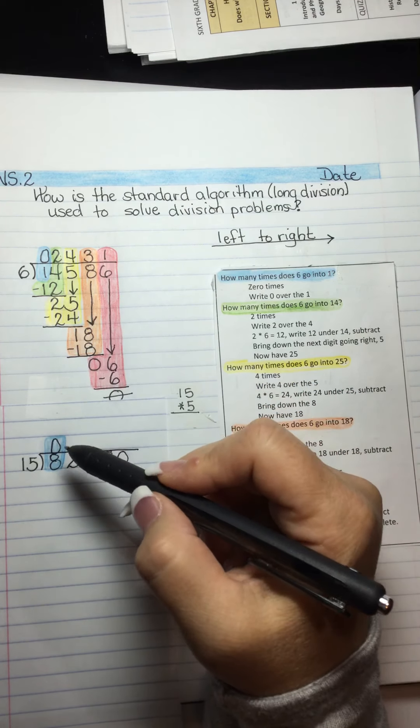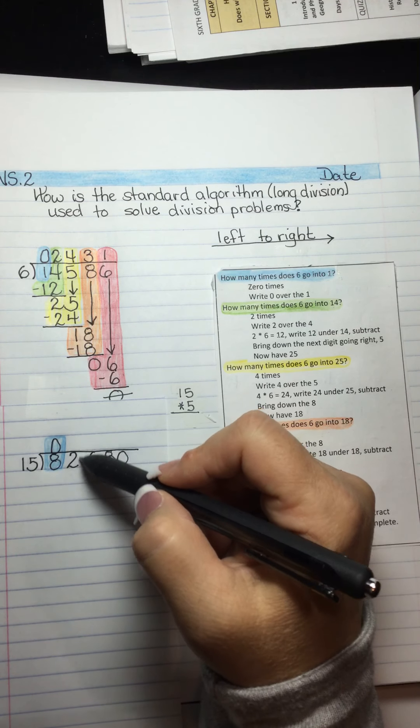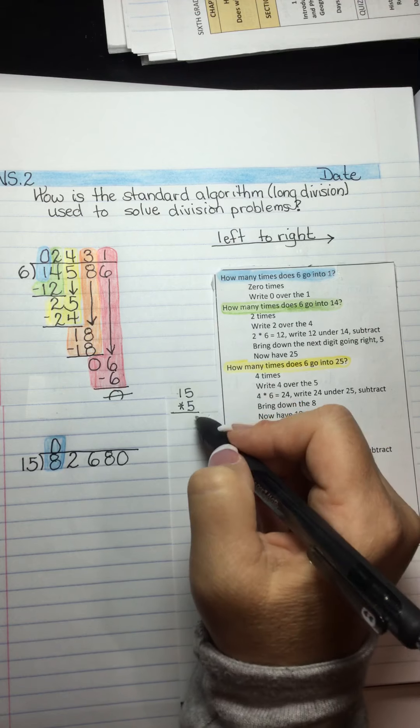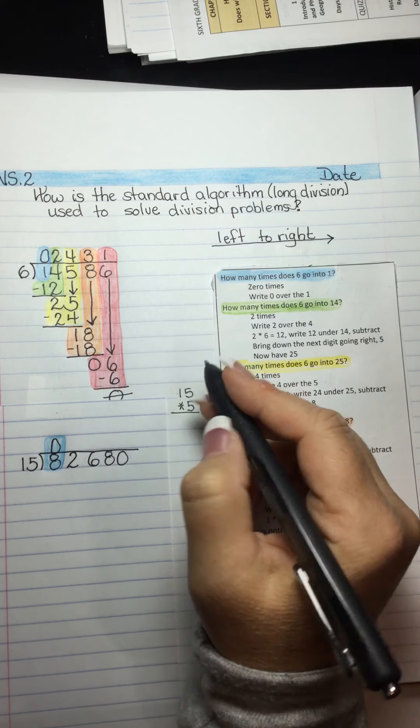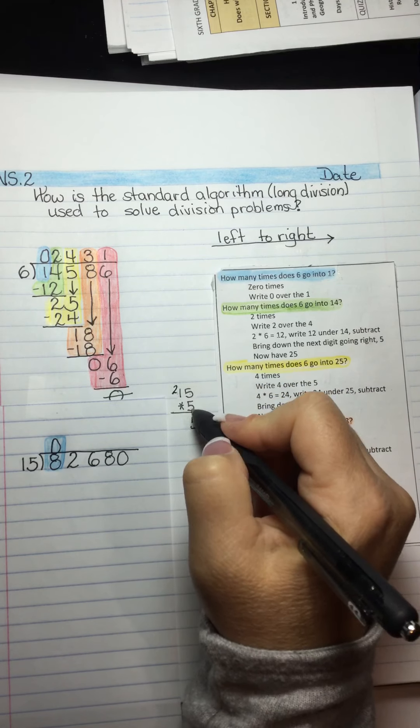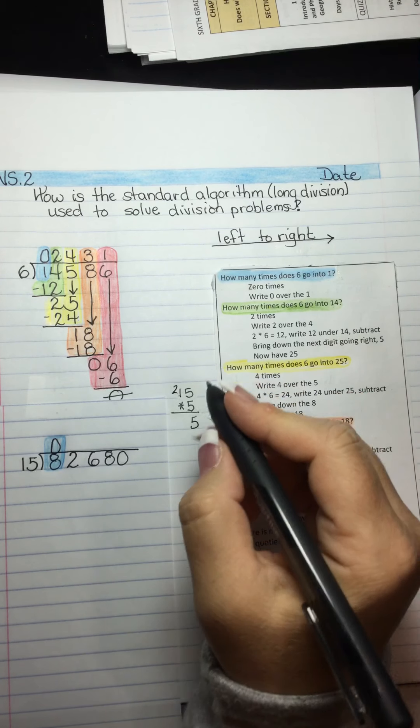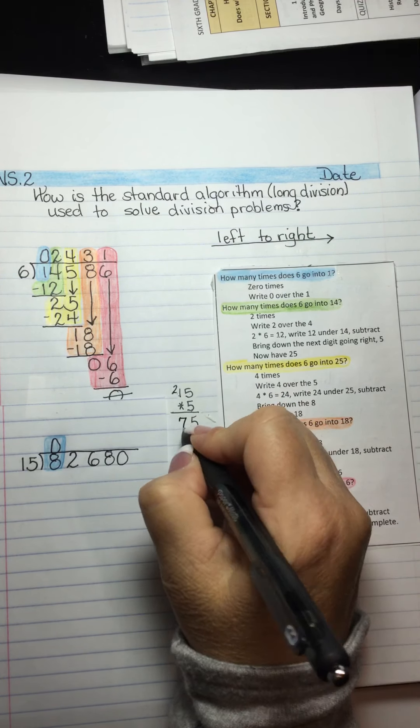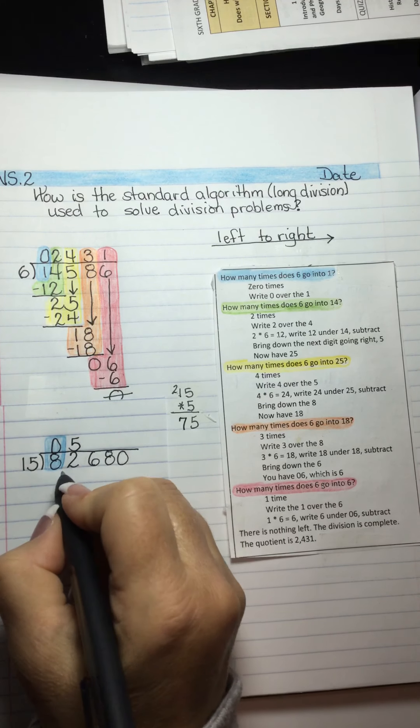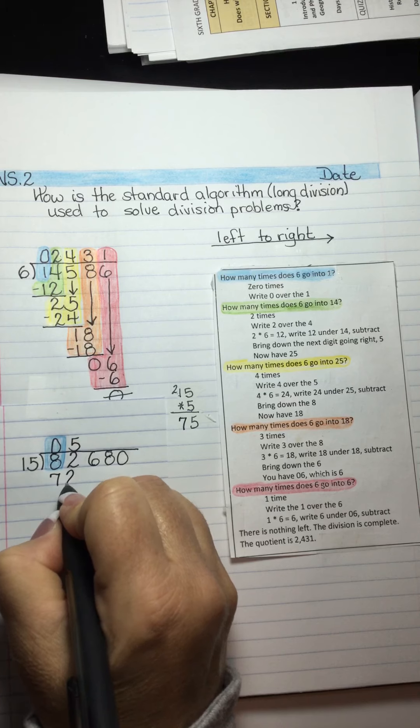And since we can't use double digits above each digit, so 0 to 9, I'm going to start with 5. 5 times 5 is 25, carry the 2. 5 times 1 is 5, plus 2 is 7. So 75 is the closest that we're going to get to 82 without going over.